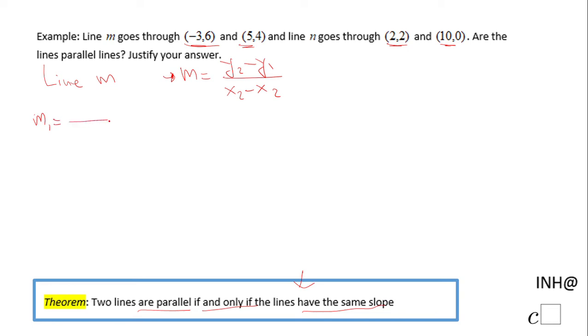You see how I marked them: point 1 is (x₁, y₁) - the x coordinate and the y coordinate - and then point 2 is (x₂, y₂). So we're going to have 4 minus 6, that is y₂ minus y₁, over x₂ minus x₁. Here we need x₂ minus x₁, so that will be 5 minus (-3).